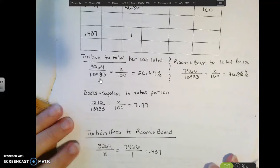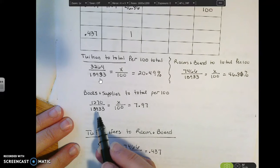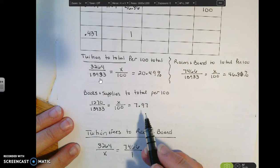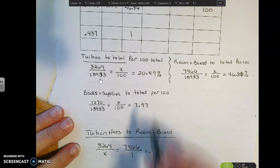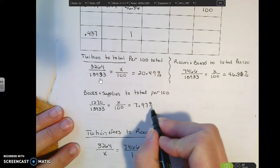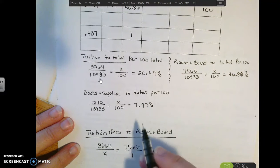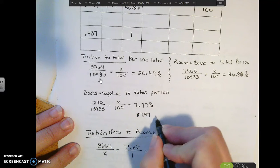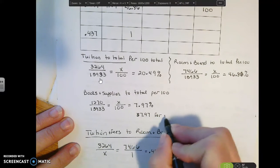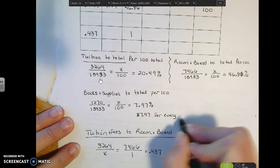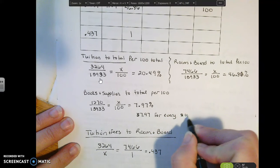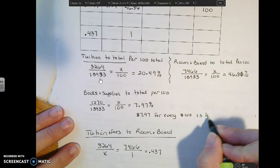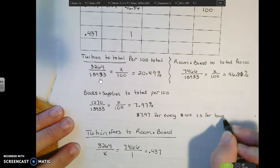Okay, books and supplies is another example. So we're doing the same thing and we find out that it's 7.97. So again, it's 7.97%. Another way of saying this is $7.97 for every $100 is for books and supplies.